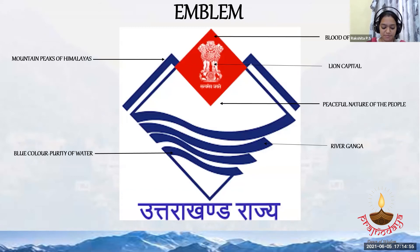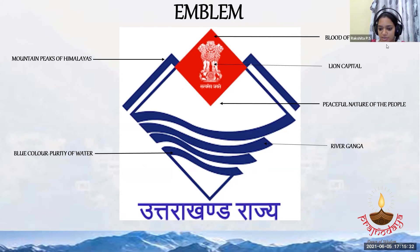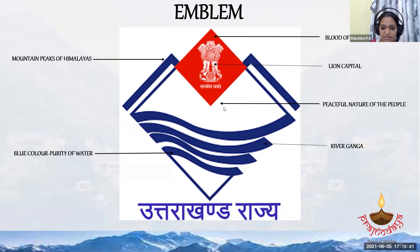Lastly, coming to the emblem — like every other state, Uttarakhand has its own emblem. The emblem of Uttarakhand is a diamond-shaped emblem with a white background and blue borders, supporting the stylized mountain peaks of the Himalayas. The Lion Capital of Ashoka is superimposed on the emblem, and it also has the national motto 'Satyamev Jayate.' At the borders in blue color is inscribed 'Uttarakhand Raj.' The red diamond represents the blood of the statehood activists who fought for the separation of Uttarakhand. The white represents the peaceful nature of the people, the wavy lines represent the river Ganga, the mountain peaks represent the Himalayas, and the blue represents the purity of water in Uttarakhand.